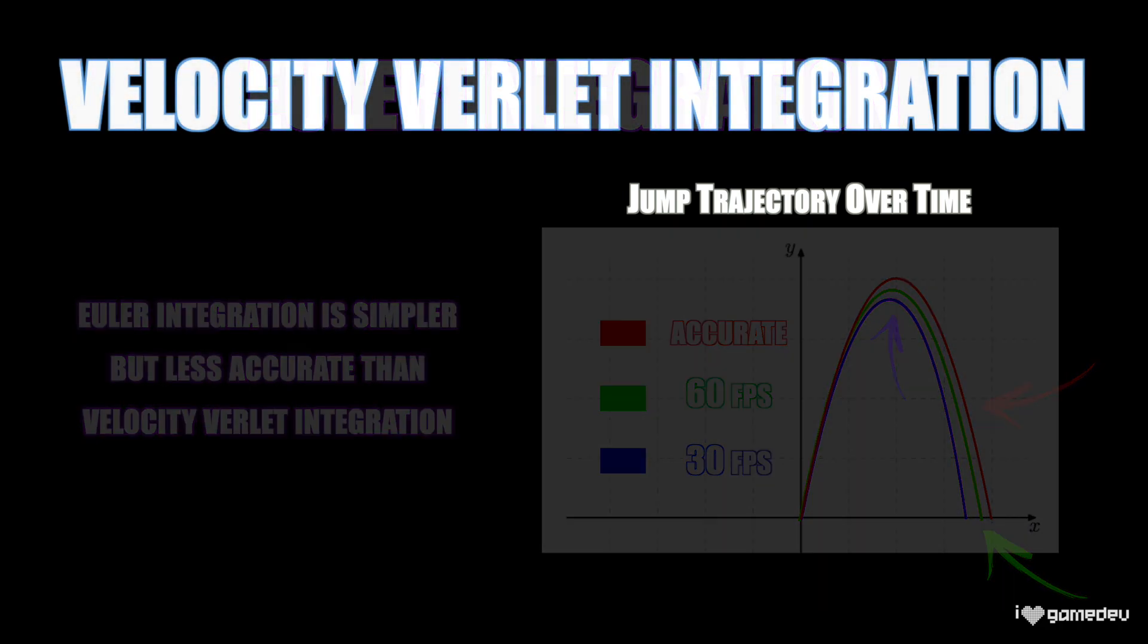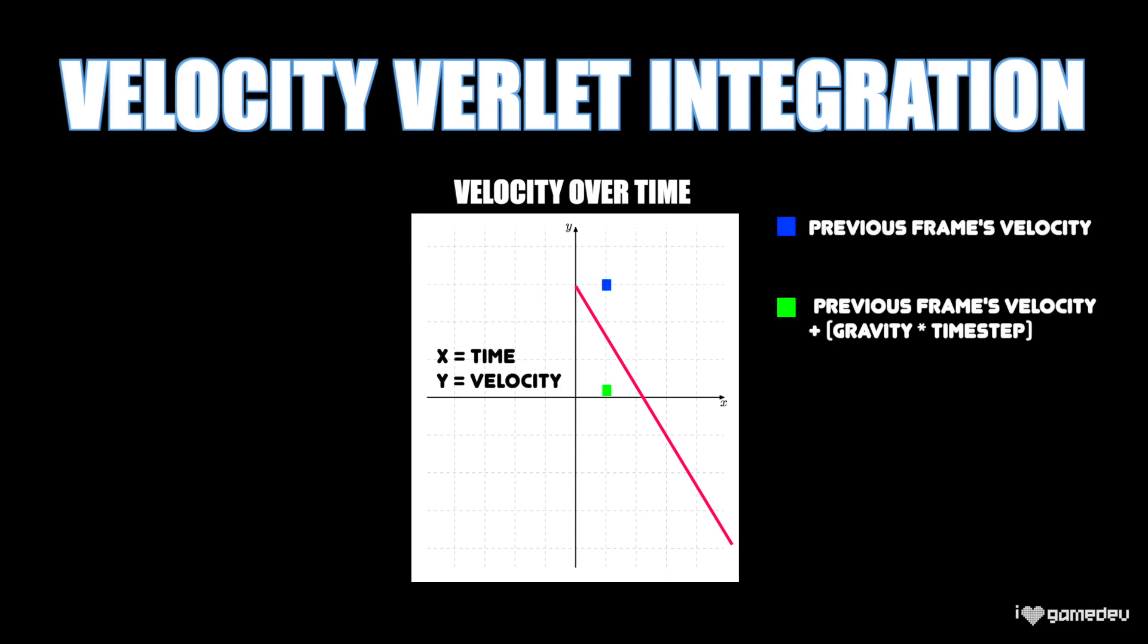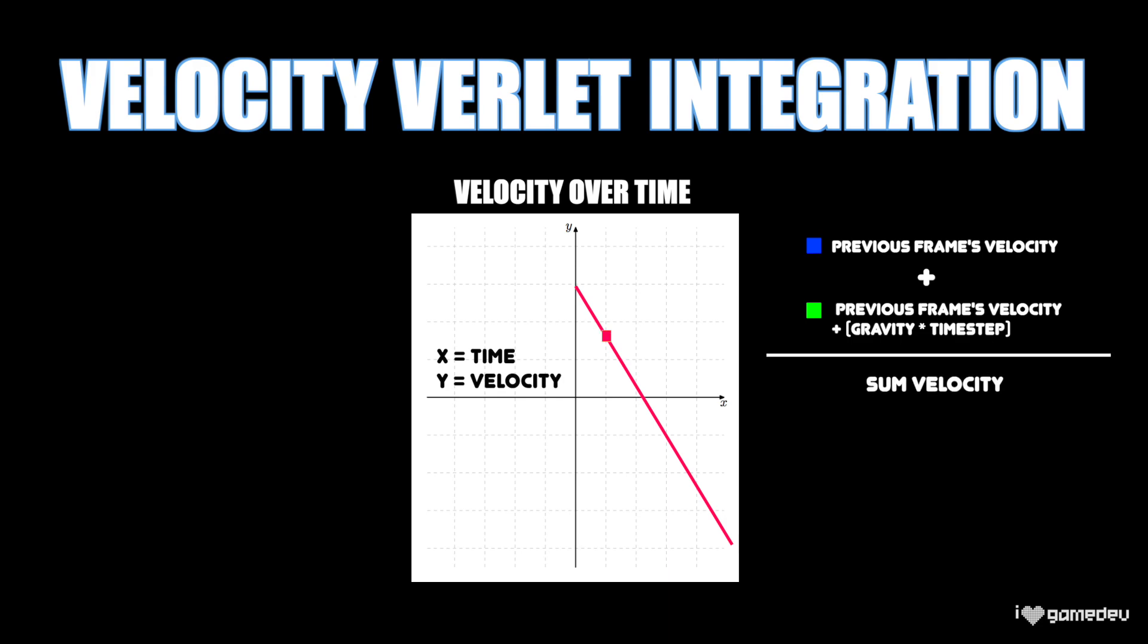How does Velocity Verlet integration get this consistency? Well, we know that gravity is applied every frame of the game. So what Velocity Verlet integration does is save the previous velocity, then calculate a new velocity by taking the previous velocity value and adding a gravity value that's been multiplied by the time step. And the last step is adding the new and previous velocities together and multiplying by 0.5 to average them. Velocity Verlet integration states that this calculated average is the value that we should apply to our position every frame.